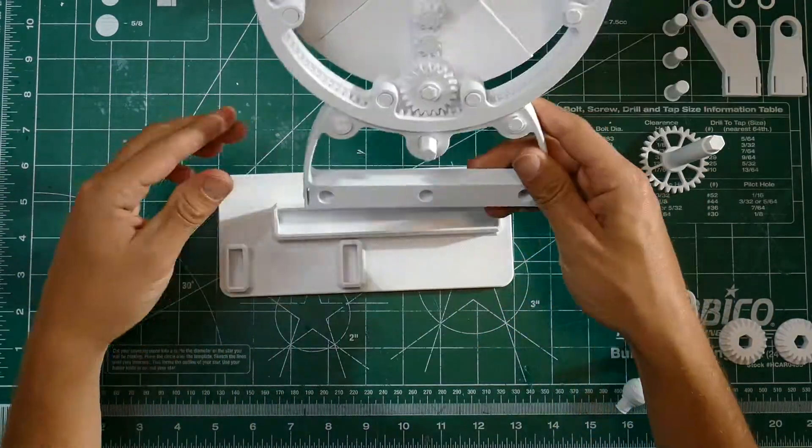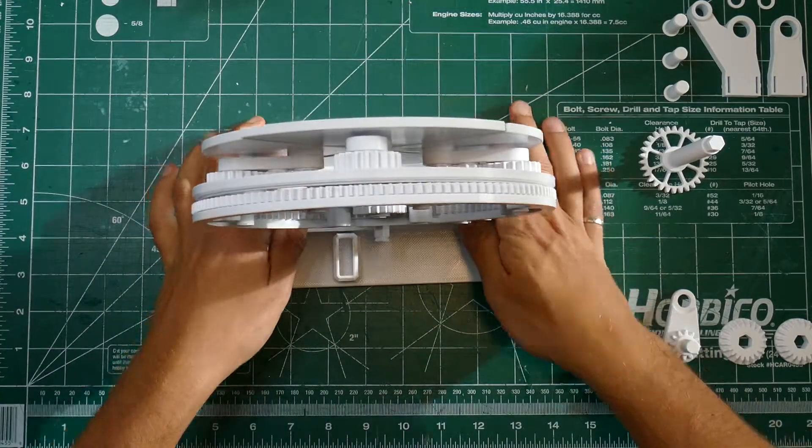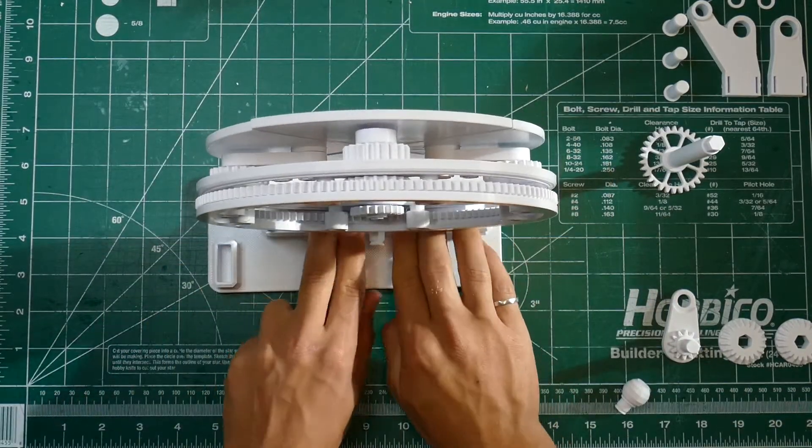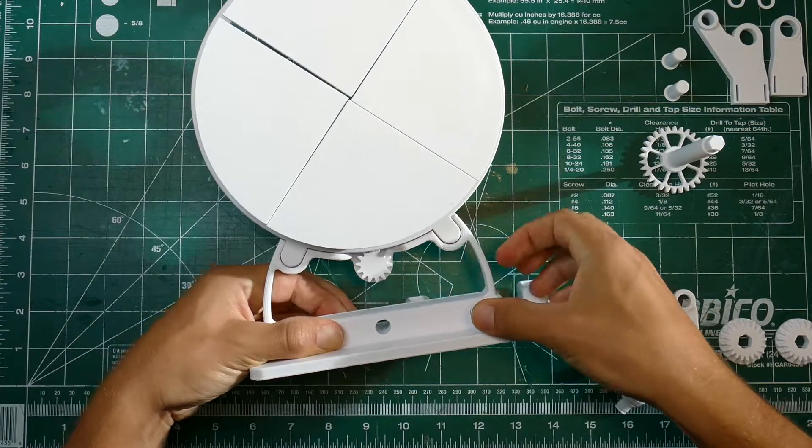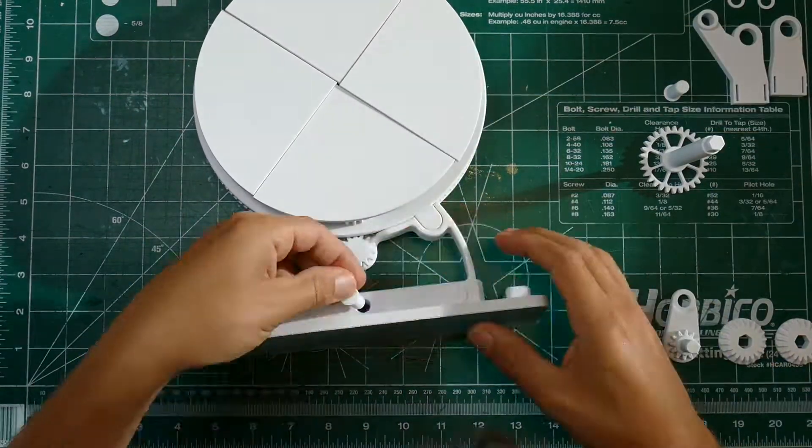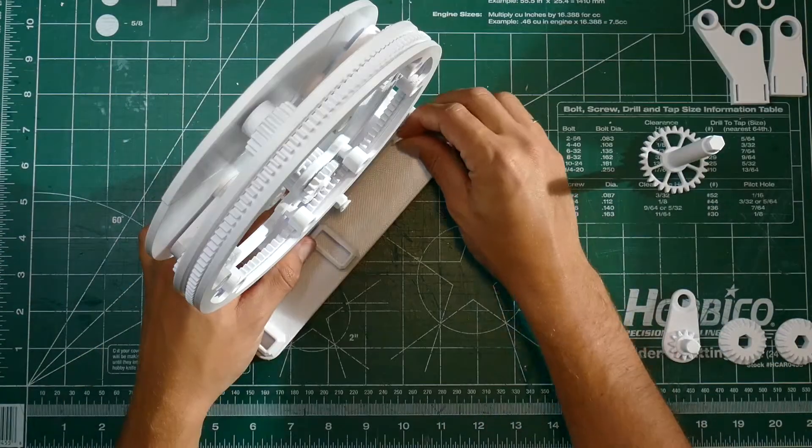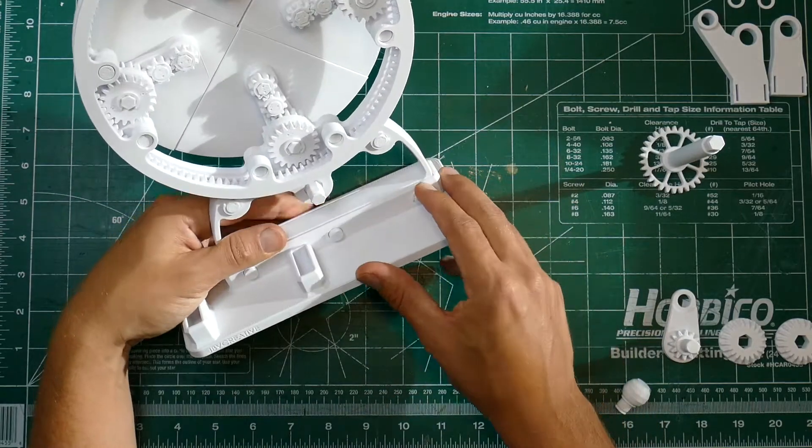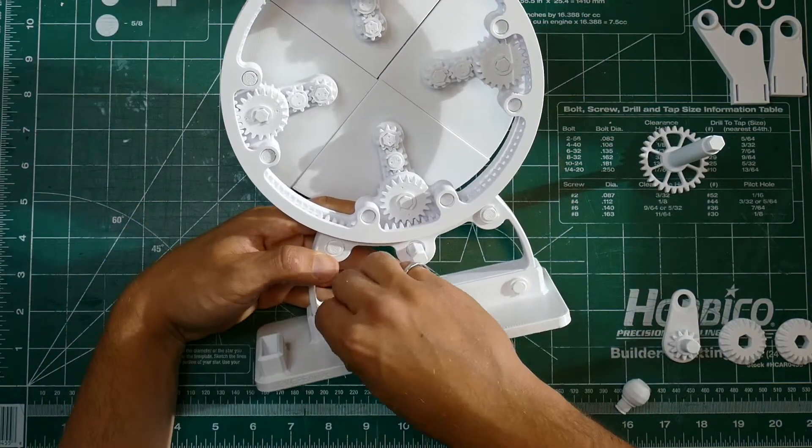Grab your base and pop the stand into the base. You might need to press a little bit hard to get it in there, but it will go and once it's in you can throw these three pins into place to make sure everything is secure. Throw some C-clamps onto the back of those pins and you can move on.